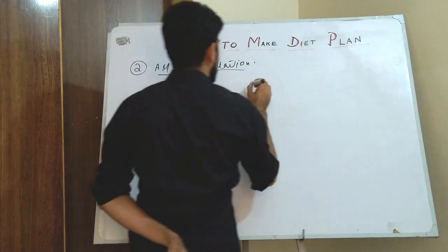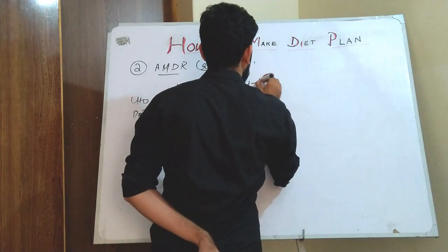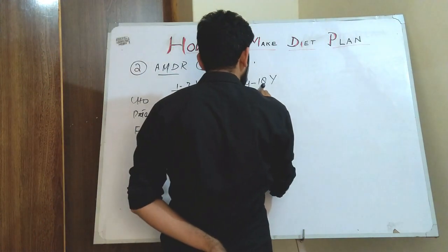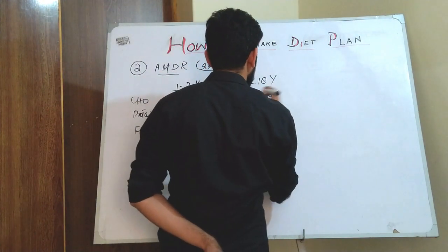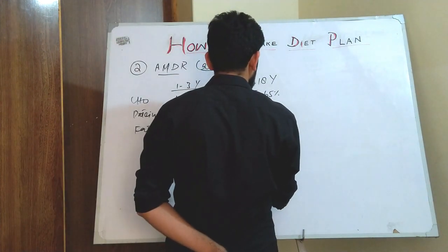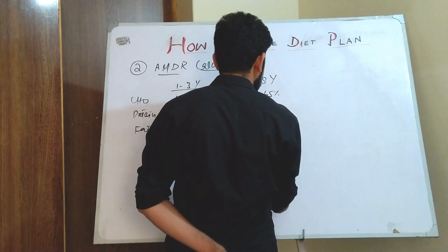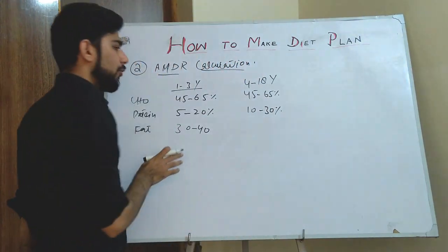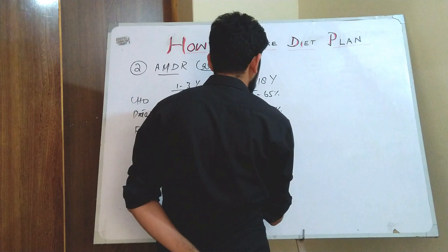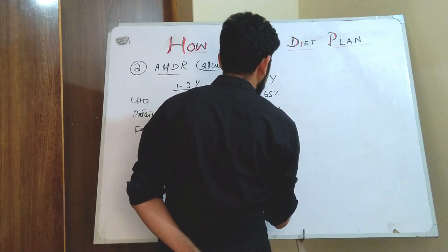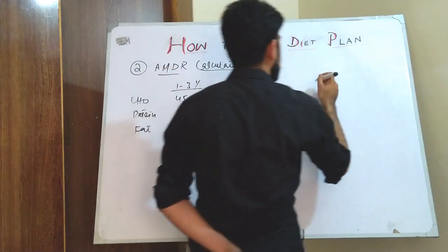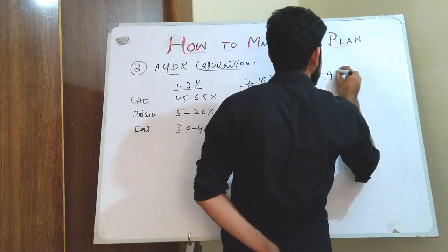For the age group 4 to 18 years, the AMDR for carbohydrate is 45 to 65 percent, for protein it is 10 to 30 percent, and for fat it is 25 to 35 percent.